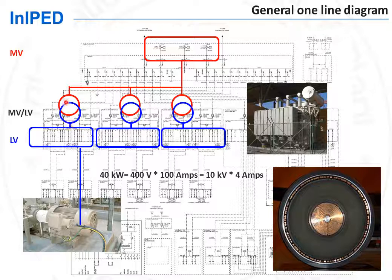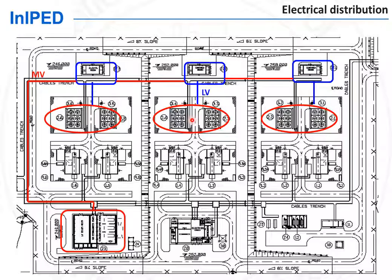Electric power is carried by medium voltage cables, like 10 kV cables, over a long distance. Therefore, electrical substations with transformers are located throughout the plant. Large power consumers are identified on the plot plan — for instance, here the large power consumers are the air-cooled heat exchangers. Electrical substations are located next to these high power consumers so that the length of the low voltage cables is minimized.